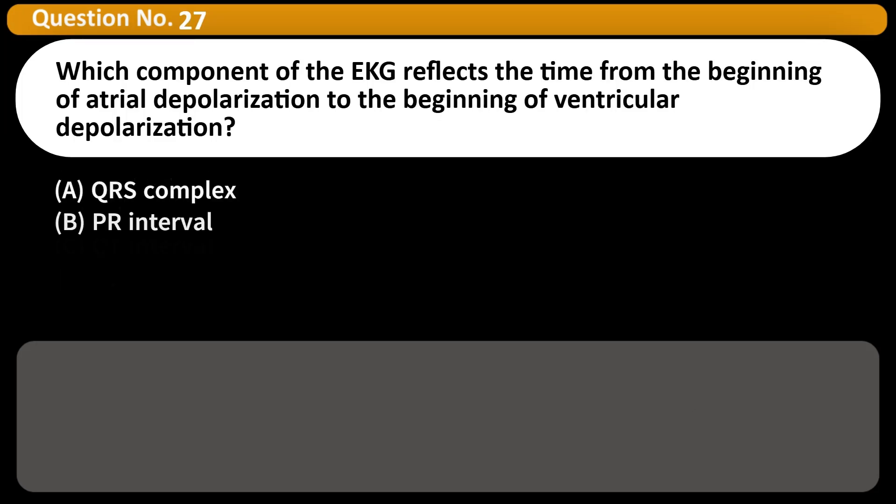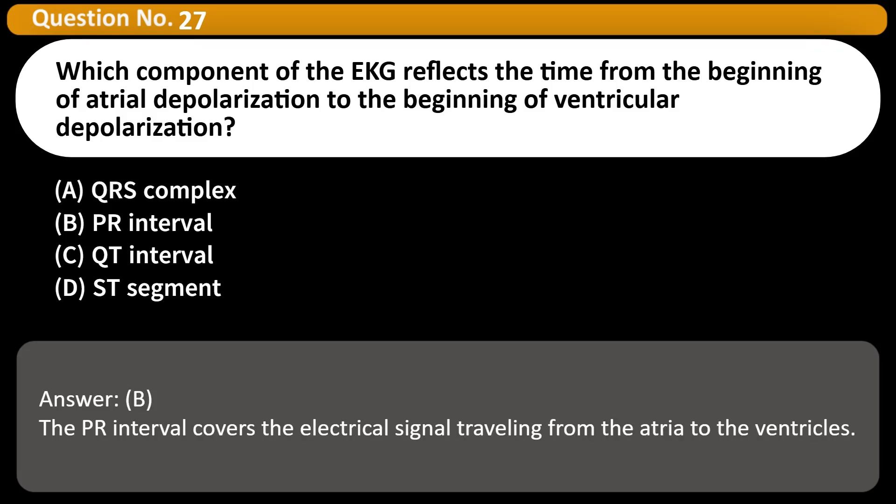Which component of the EKG reflects the time from the beginning of atrial depolarization to the beginning of ventricular depolarization? A. QRS complex B. PR interval C. QD interval D. ST segment Answer B. The PR interval covers the electrical signal traveling from the atria to the ventricles.